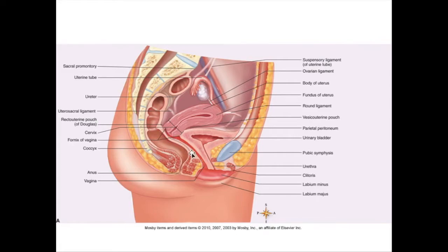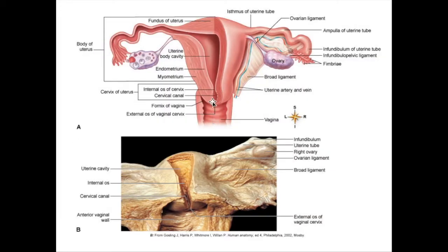Basically at a right angle to the uterus is going to be the vaginal passage. So here's your vagina and here is your uterus — the uterus tends to tilt forward, but they are at different angles to each other. Here we have an anterior perspective. Again, we have the fundus, body, cervix, and here's your vaginal passage.